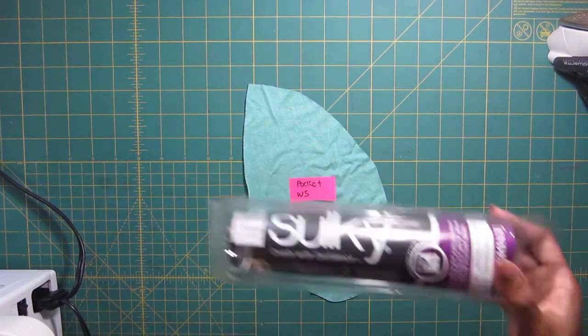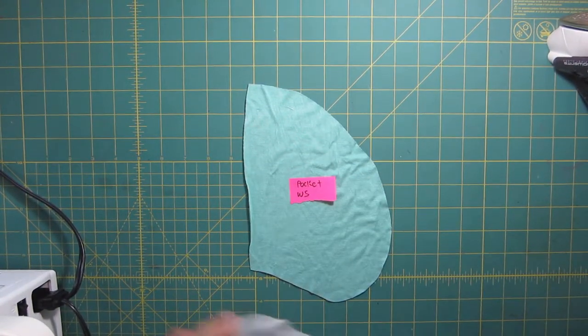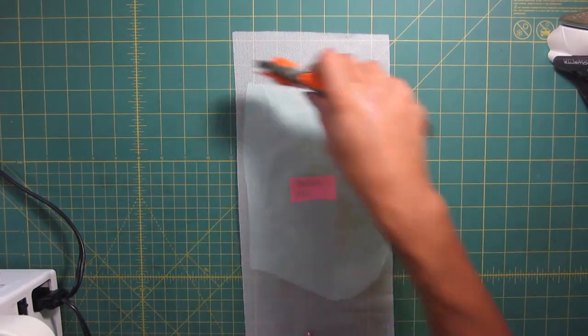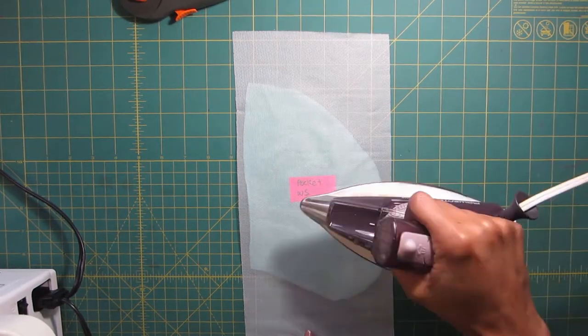If you want to add interfacing to your pocket for extra stability, you would cut the interfacing out in the same shape as the pocket and then iron it on. I use knit interfacing.